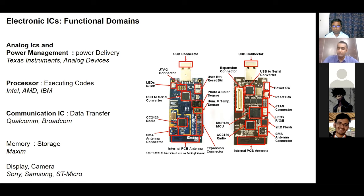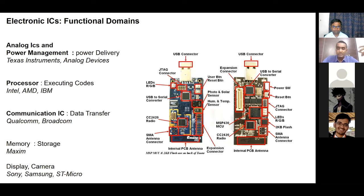So there are many different components. I've classified them into categories. The first is analog ICs and power management ICs, where companies like Texas Instruments and Analog Devices are top players. Analog ICs deal with natural information from outside, which is analog. For example, a temperature sensor converts temperature variation into proportional voltage variation — a continuous analog quantity — which then needs to be converted to digital data since computers work with binary data.